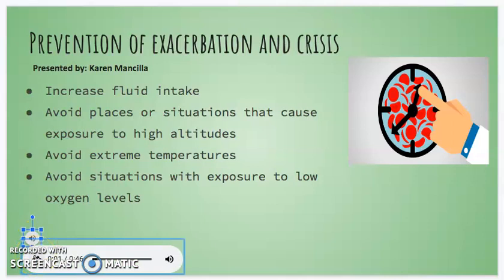Sickle cell crisis is a painful episode that may begin suddenly in a person who has sickle cell disease. It occurs when sickle-shaped red blood cells clump together and block small blood vessels that carry blood to certain organs, muscles, and bones.